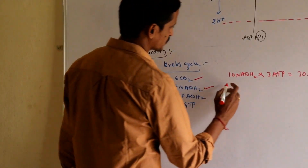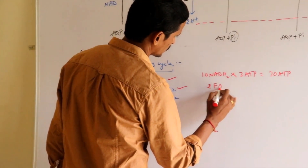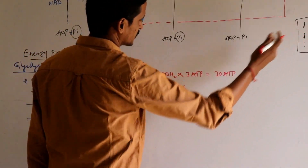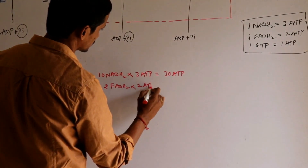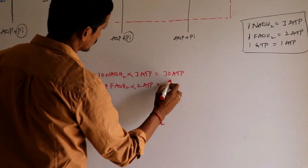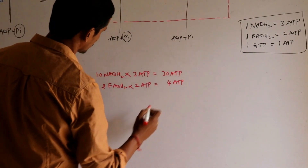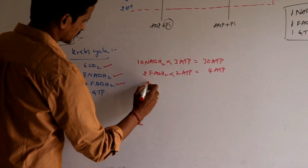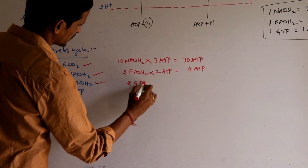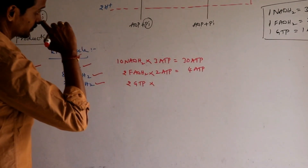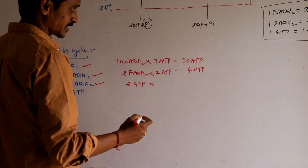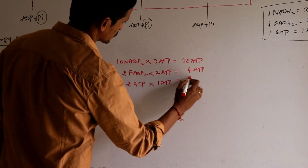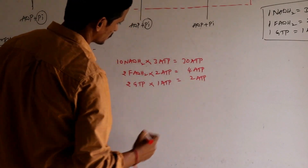Next, there are 2 FADH2. 2 FADH2 × 2 ATPs = 4 ATPs. There are also 2 GTPs — each GTP is converted into 1 ATP based on transphosphorylation — giving 2 ATPs more. And we got directly 4 ATPs from glycolysis.